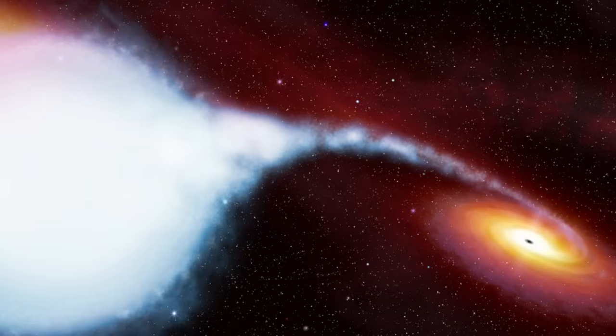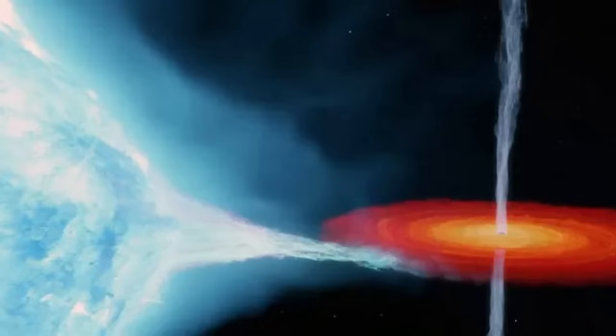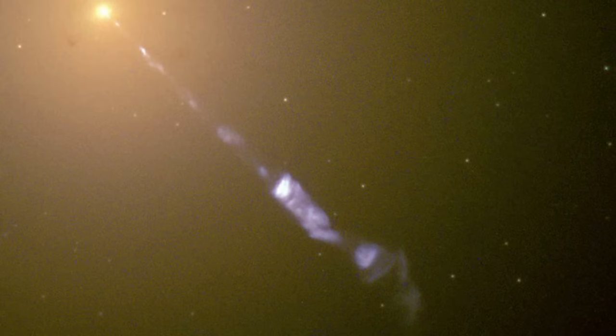They also occur, on a smaller scale, in our own galaxy. The first identified black hole, Cygnus X1, possesses not only an accretion disk, but a jet similar to, though far smaller than, that emanating from the famous supermassive black hole at the center of the galaxy M87.